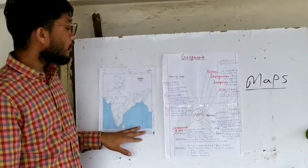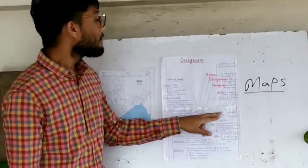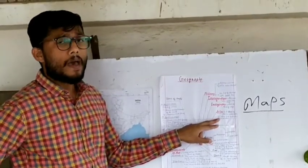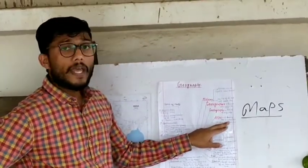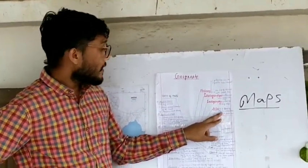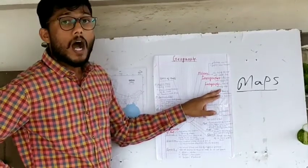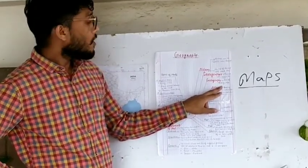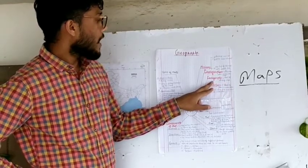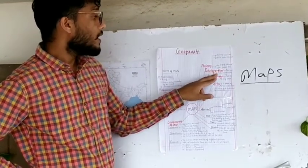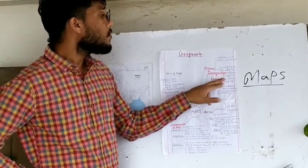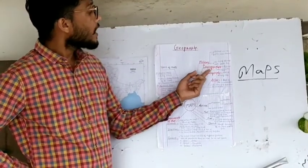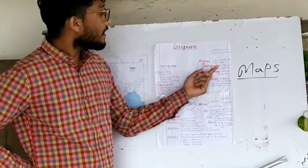Atlas means a book of maps — a book of maps is known as an atlas. Cartography is the art of making maps. A cartographer is a person who makes maps.